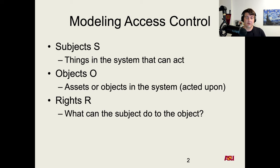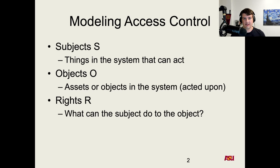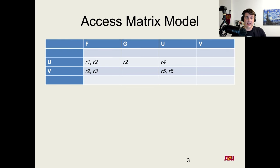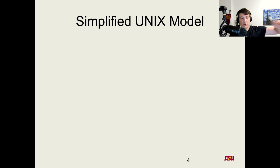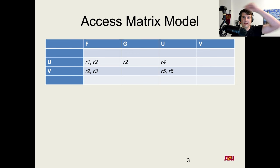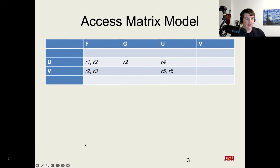Given this model with sets of subjects, objects, and rights, how do we know what the access control system actually allows? One of the easiest ways is with a matrix — a giant table. The columns are the objects (F, G, U, V) and the rows are the subjects (U and V). So in this system, U and V are subjects and F, G, U, V are all objects.